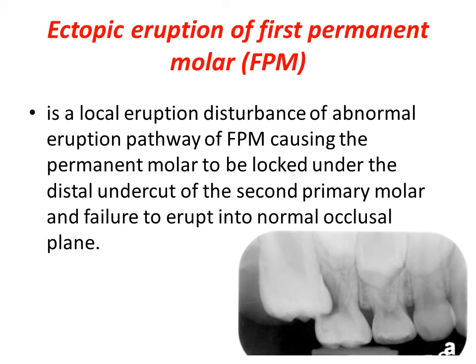Ectopic eruption of the first permanent molar is a local eruption disturbance — an abnormal eruption pathway of the first permanent molar — causing the permanent molar to be locked under the distal undercut of the second primary molar, as we see in this radiograph.